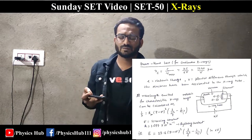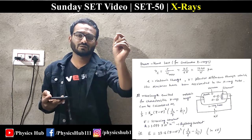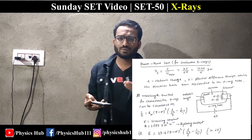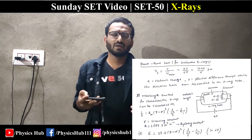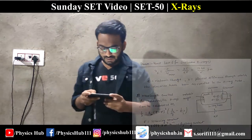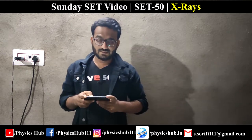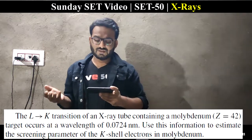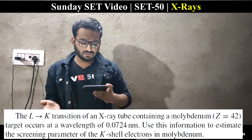Here n_f is the final state and n_i is the initial state. For example, if an electron jumps from n = 2 to n = 1, then n_i = 2 and n_f = 1. The energy formula is in electron volts. Now let's go to question number one.